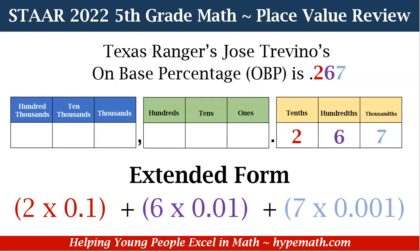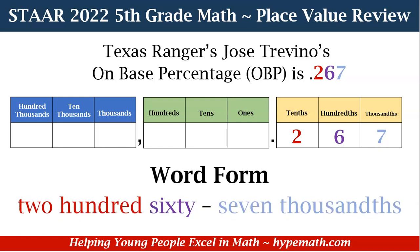Now let's look at how this can be written in word form. It's color-coded so you can follow along. We have 267 thousandths — this is how we say the number 0.267. Let's look at another example before we dive into our first word problem.